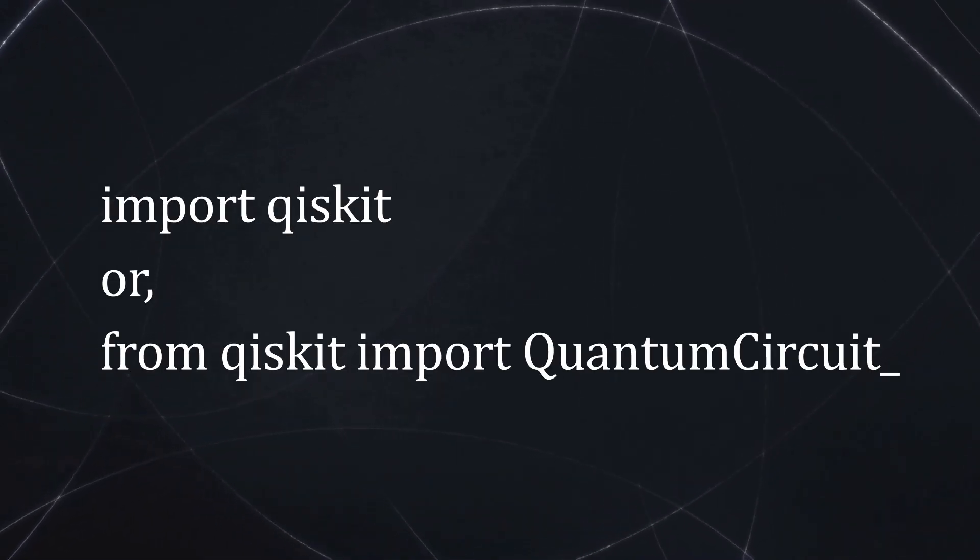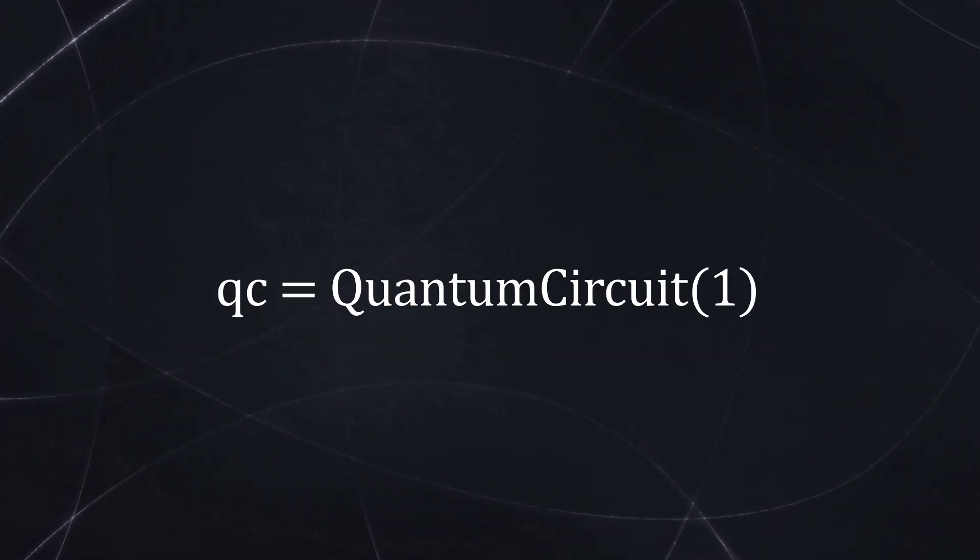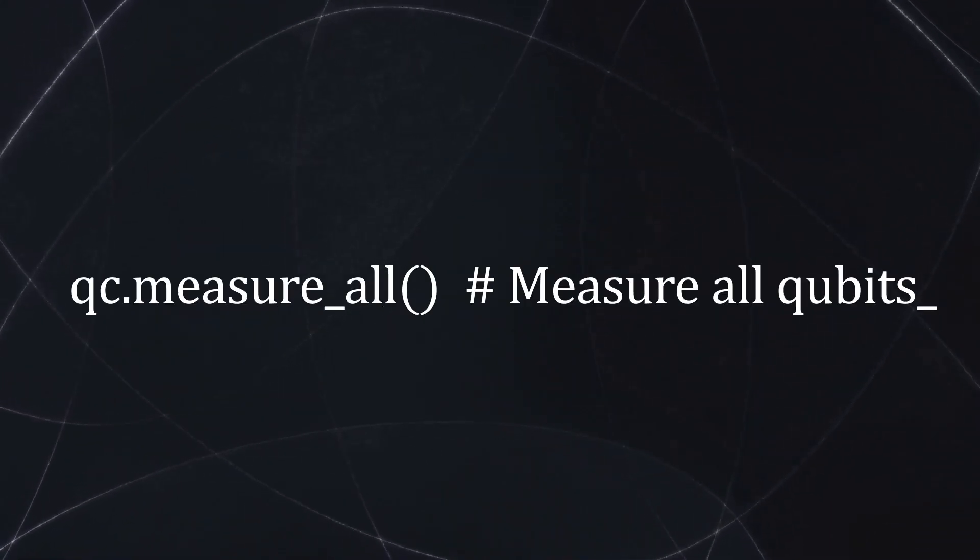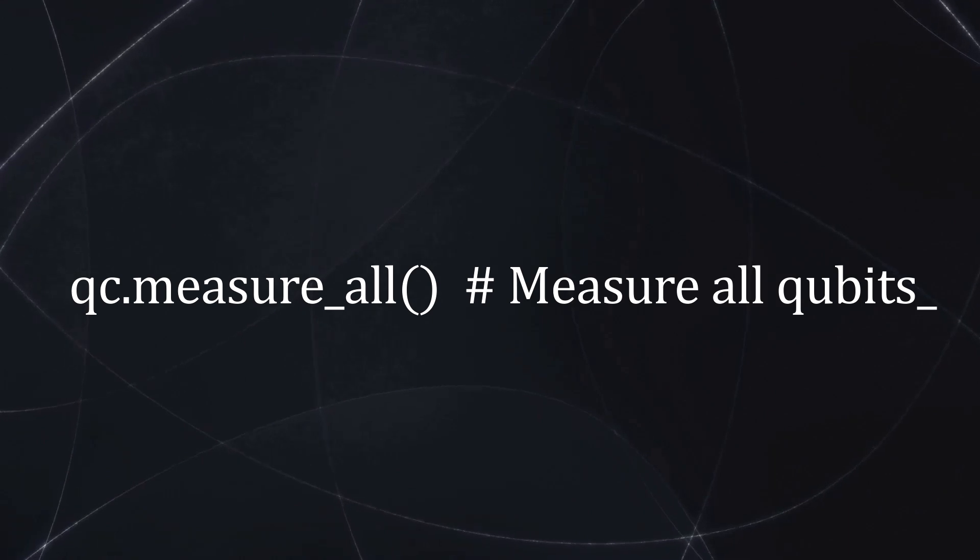In Qiskit, quantum circuits are created in Python and consist of qubits, gates, and measurements. Think of it like building a blueprint for how your qubits will evolve step by step before finally reading out their states. Here's a simple outline: First, start by importing the necessary tools from the Qiskit library—type 'import qiskit'. Now create a quantum circuit. We specify how many qubits we want. For example, a single qubit circuit might be described as qc = QuantumCircuit with one qubit. Now apply quantum gates. We place gates like Hadamard or Pauli gates on specific qubits to manipulate their states. Next, measure the qubits. Finally we measure the qubits to obtain our classical results, which let us see how many times they collapse to zero or one across many runs of the experiment.